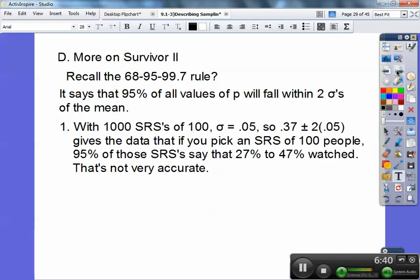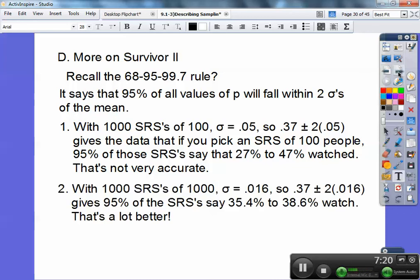Within 1,000 SRSs of 100, remember the standard deviation was 0.05. Two times 0.05, because 95% of the data is within two standard deviations, gives me 10%. So 37% plus or minus 10% is 27% to 47%. So 95% of the data goes from 27% to 47%, which is not very accurate. When we increased it to 1,000 SRSs of size 1,000, it decreased our standard deviation. Two times 0.016 gives 37% plus or minus that, making 95% of the data 35.4% to 38.6%. That's a lot better, a lot more reasonable.